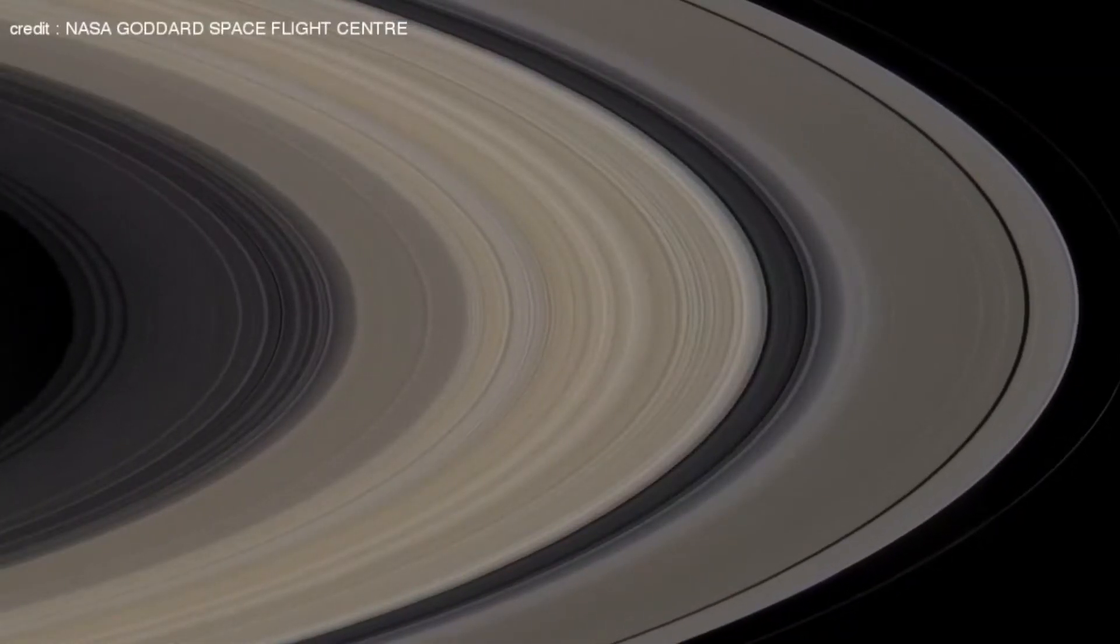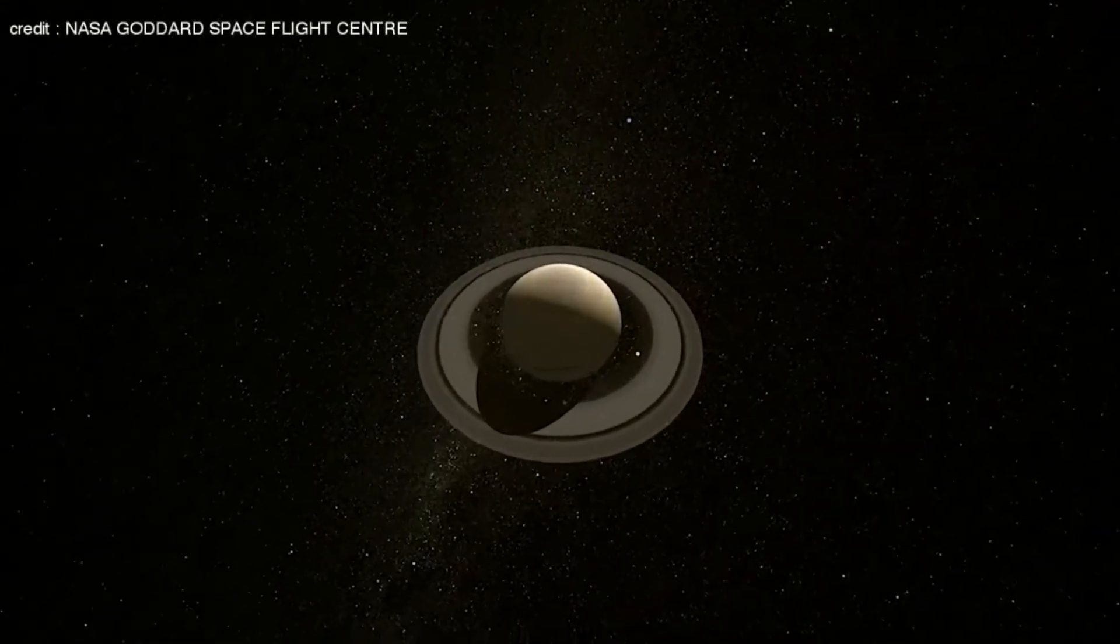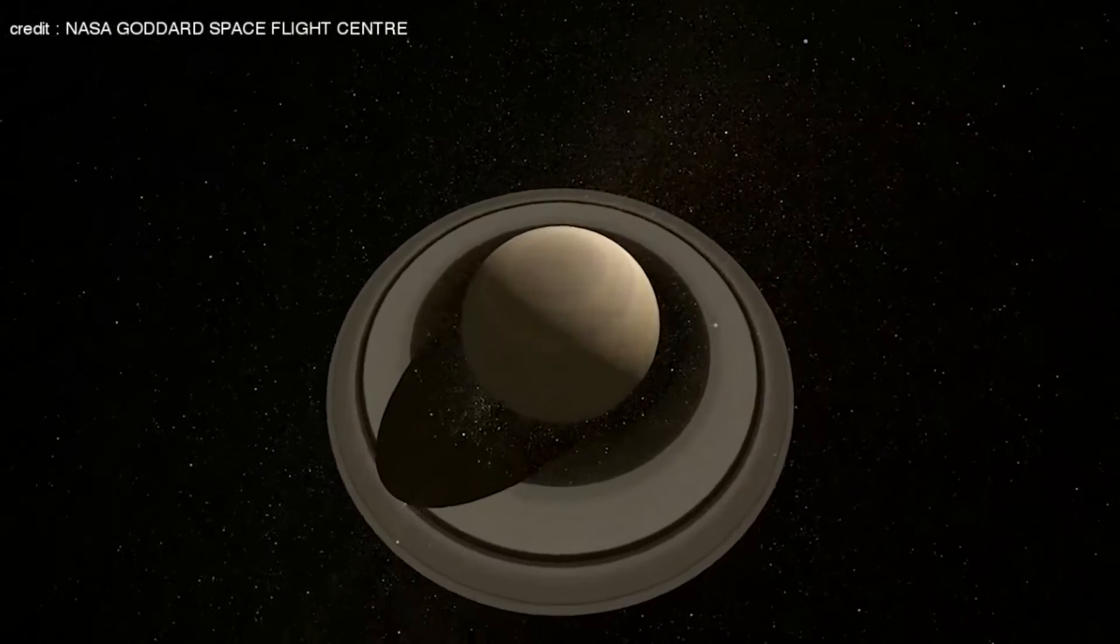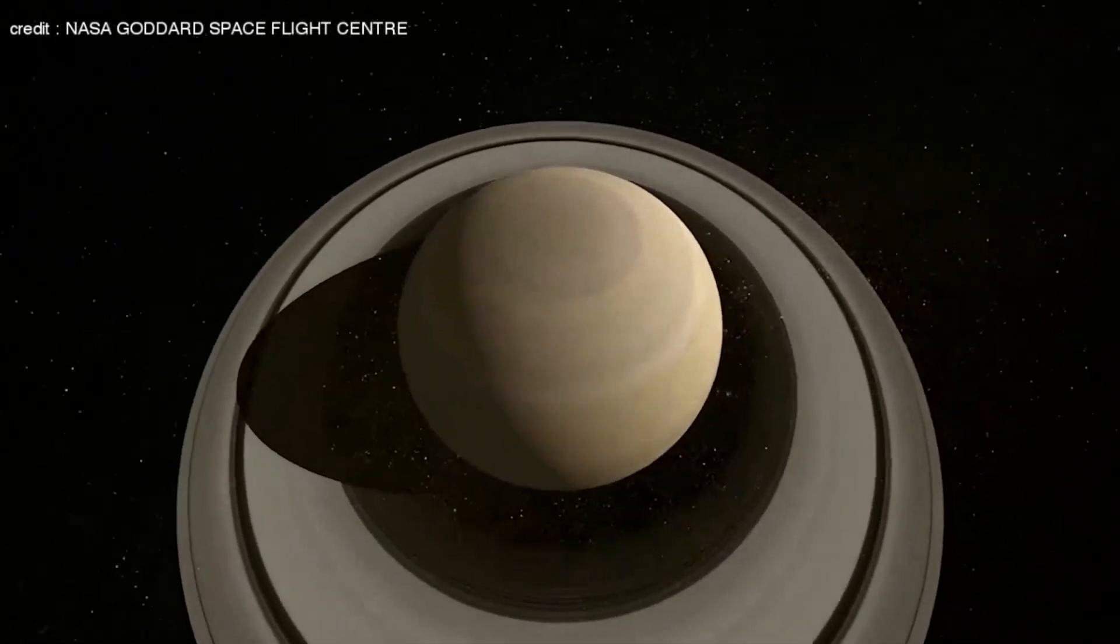If the rings had stayed intact so far, it seemed unlikely that they would suddenly start disintegrating. But Saturn is losing its rings, and it's happening very fast, much faster than scientists had previously thought.